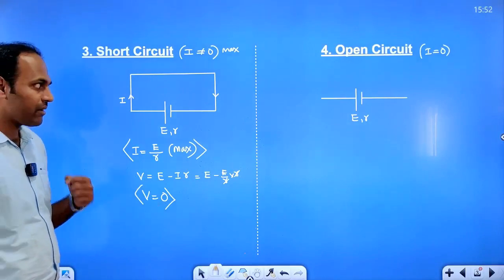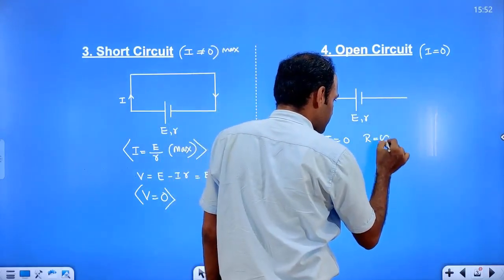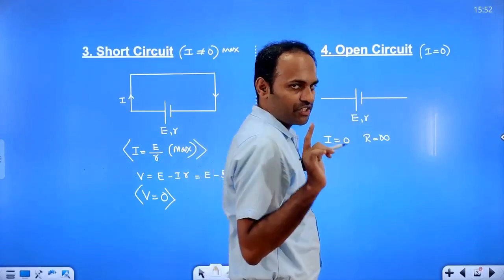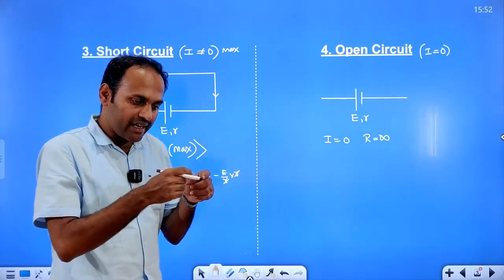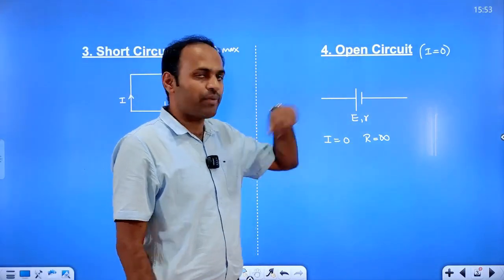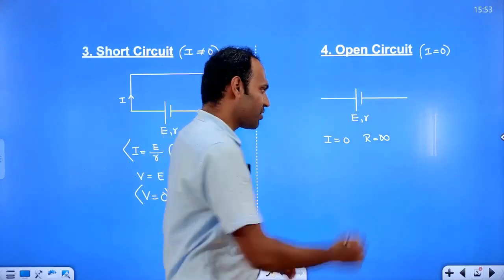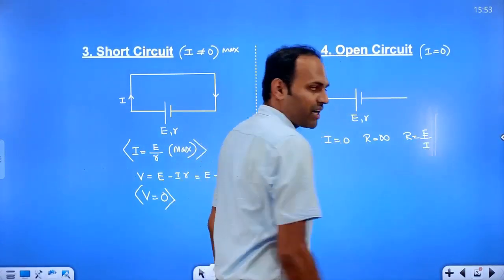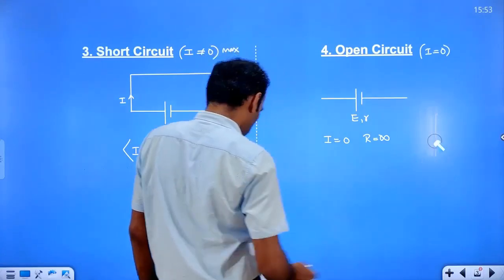In an open circuit, current is zero because there is no continuous connection from the positive terminal to the negative terminal of the cell. Air is an insulator, so current cannot flow. Since resistance equals V divided by I, and I is zero, anything divided by zero is infinity — so resistance in an open circuit is infinite.